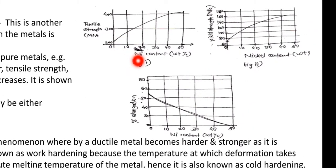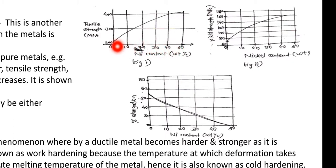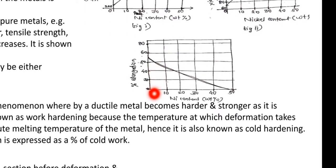Looking at the graph with nickel content in weight percentage on the x-axis: as we increase the nickel content, the tensile strength increases. Similarly, the yield strength, also measured in megapascals, increases as the percentage of nickel increases. However, the percentage of elongation decreases as we go on increasing the nickel content.